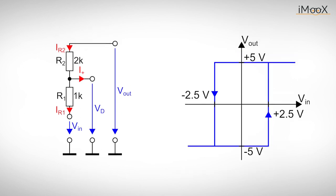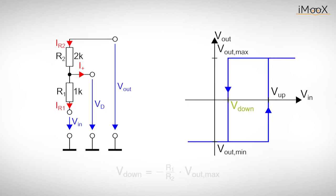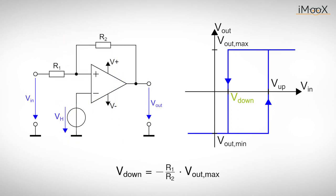This is fine, but what if we need a transfer function not centered around 0 volts? Maybe something like this. Vdown is now positive, but the formula only allows for negative values. So how can we achieve a positive Vdown? What we need is a little help from a second voltage source Vh, which we connect to the inverting input of our operational amplifier.